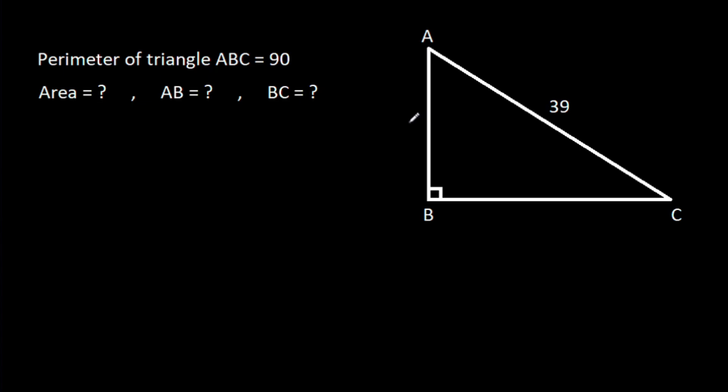In this video, we have been given that angle ABC is 90 degrees, AC is 39 and perimeter is 90, then we have to find area, AB and BC.